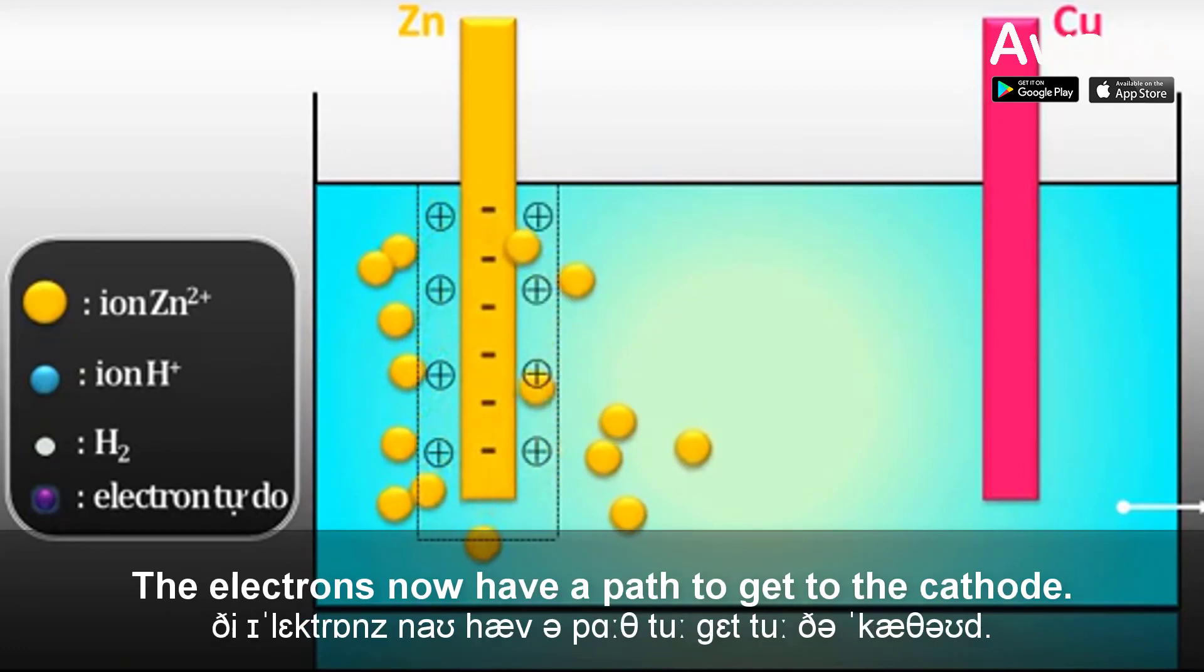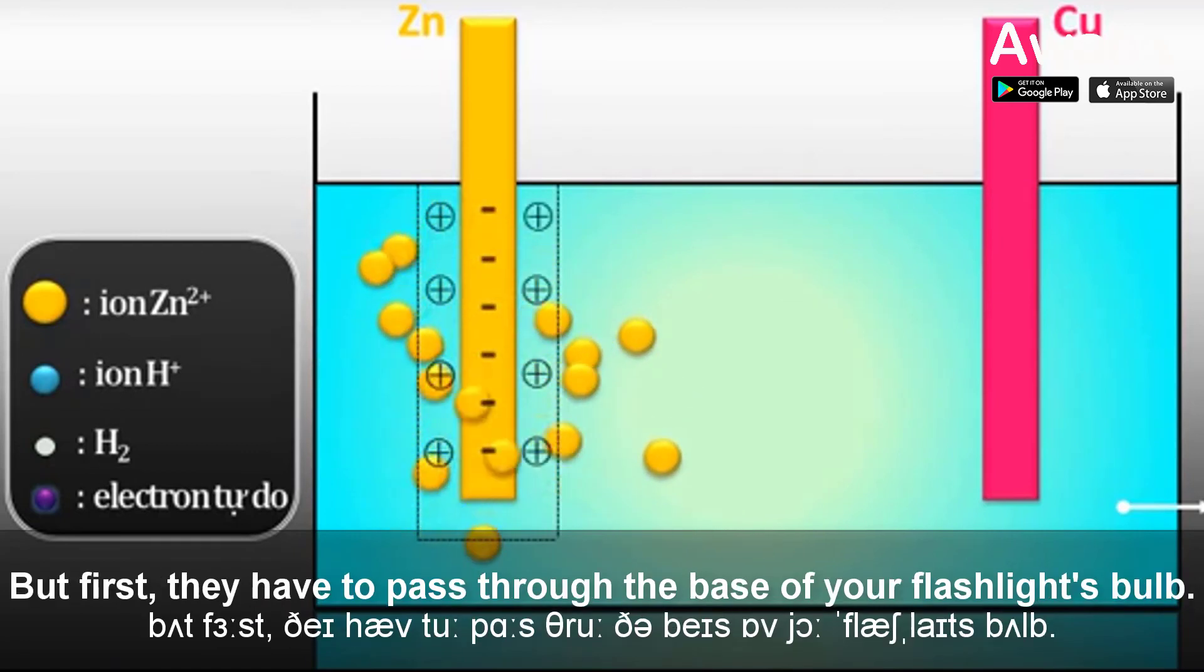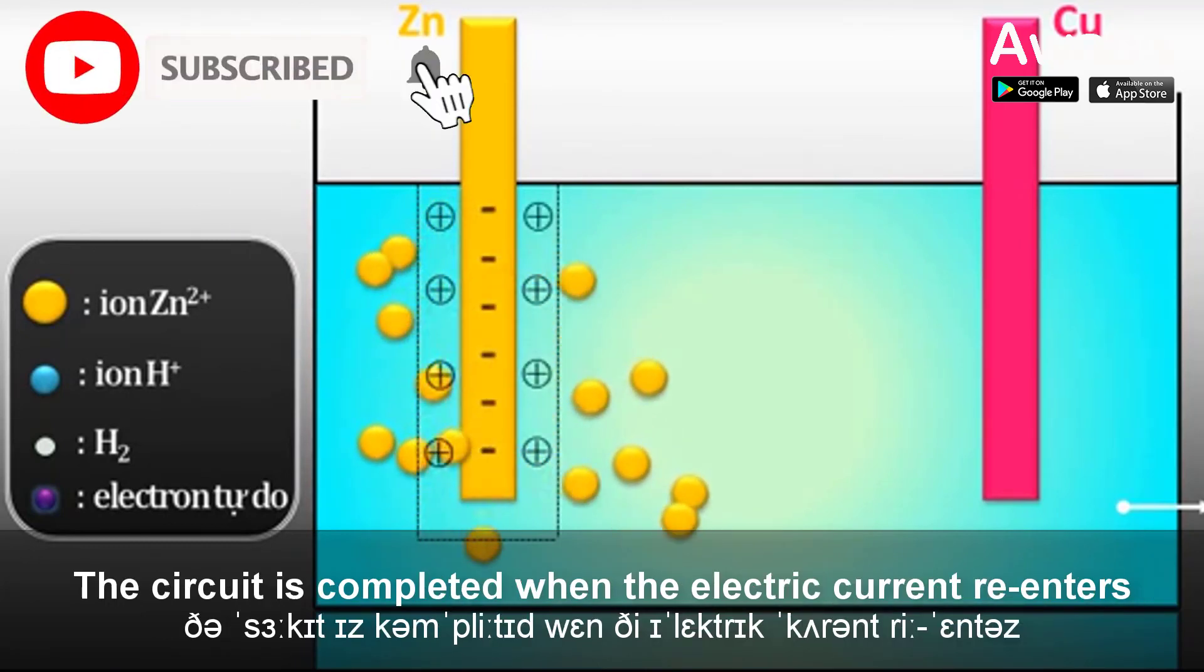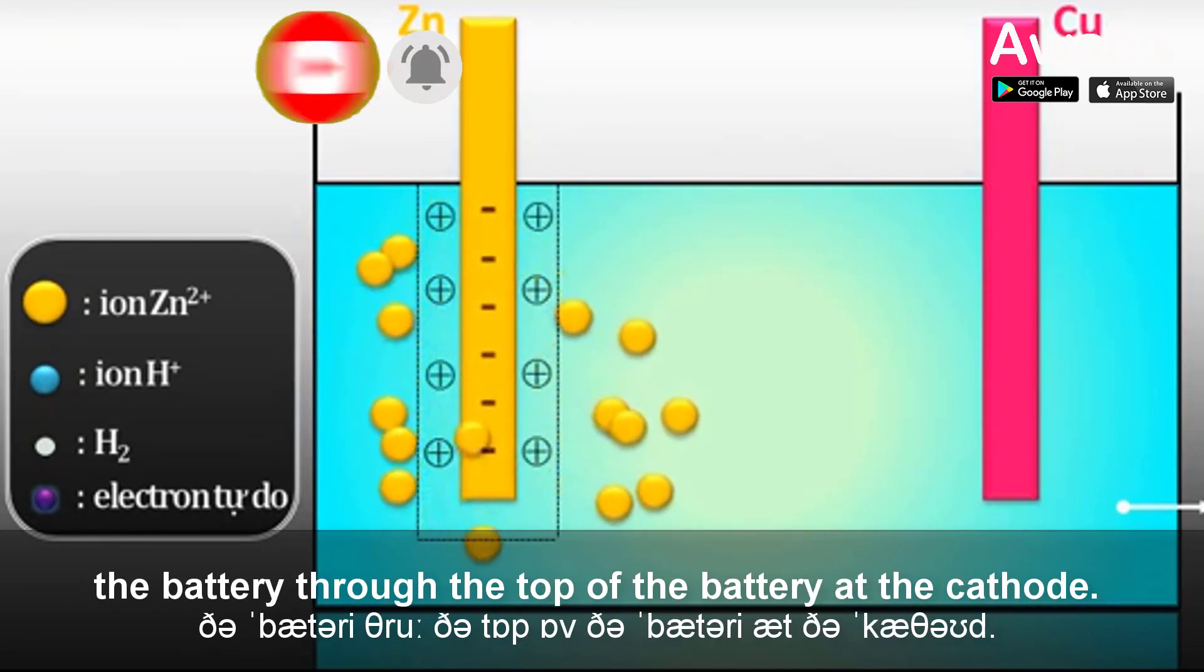The electrons now have a path to get to the cathode, but first they have to pass through the base of your flashlight's bulb. The circuit is completed when the electric current re-enters the battery through the top of the battery at the cathode.